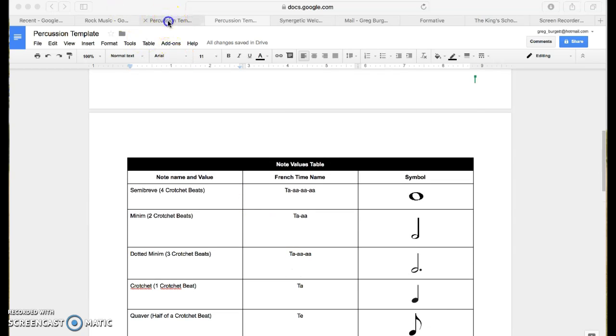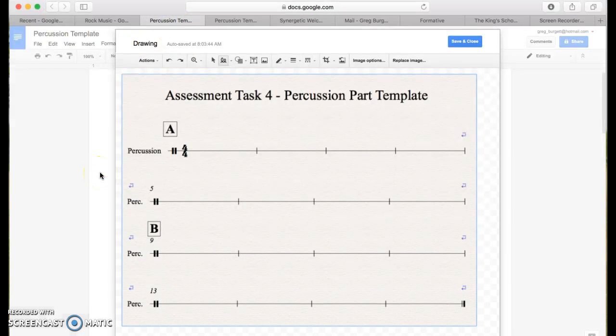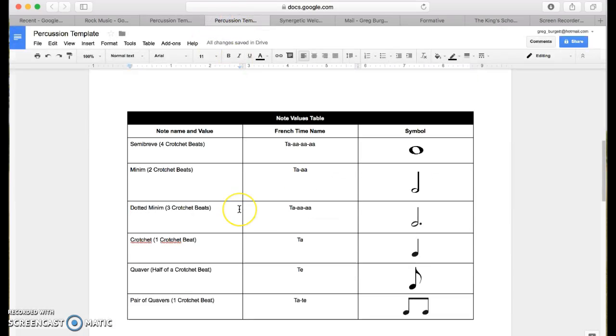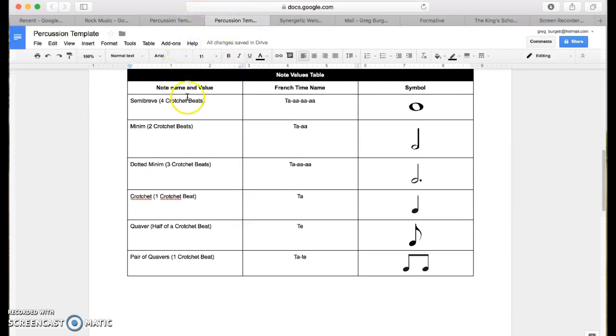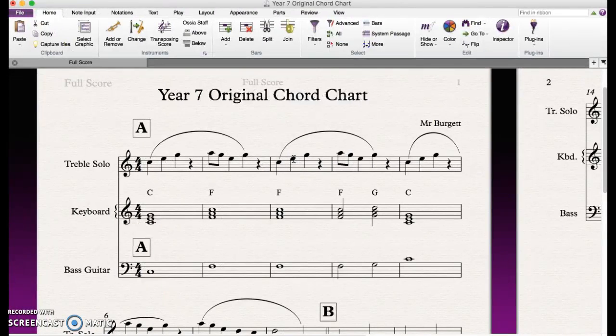So you've been given this percussion template to use. I'm using it in Google Docs because it allows me to show you electronically how to put all this together. You're going to be doing this by hand. You need to take the rhythms from here and think, how am I going to best suit these rhythms to my composition? A simple way to do it is to make sure that you are putting in a rhythm that complements what you've written in the melody part.